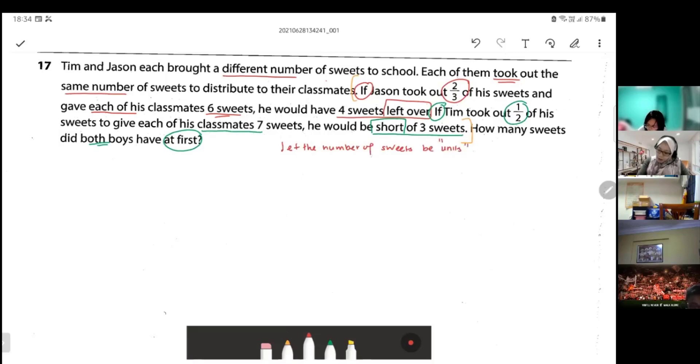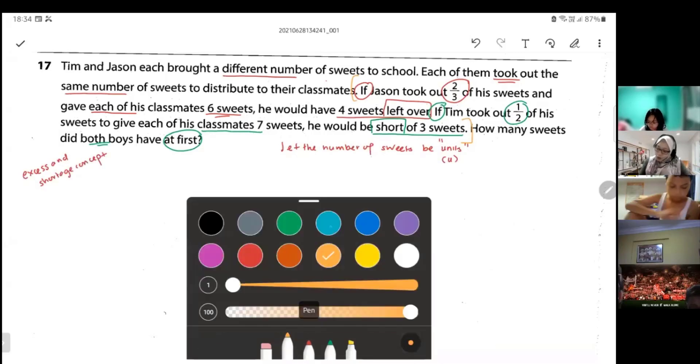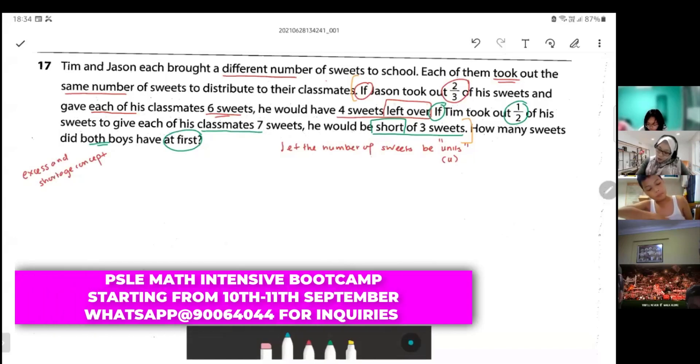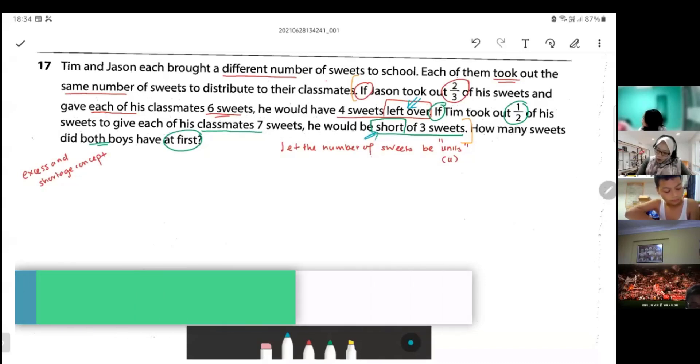In other words, it will be known as U. What I'm going to do here, I'm going to apply the excess and shortage concept. Why am I applying excess and shortage concept? Because of this word left over and the word short, and because there are two ifs in this question also.